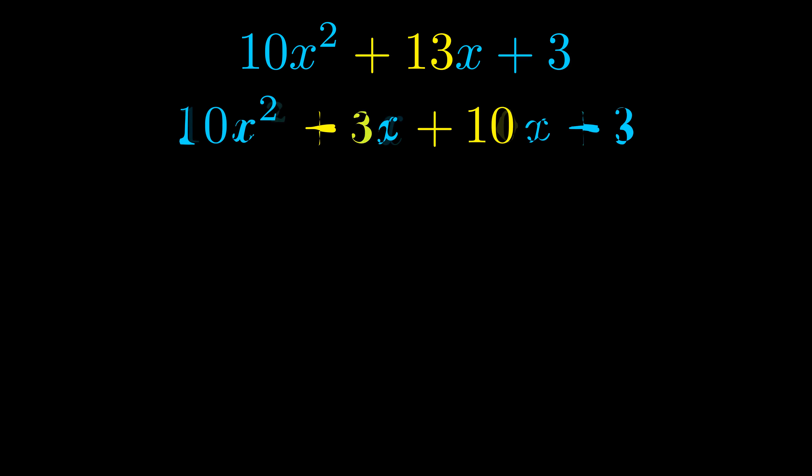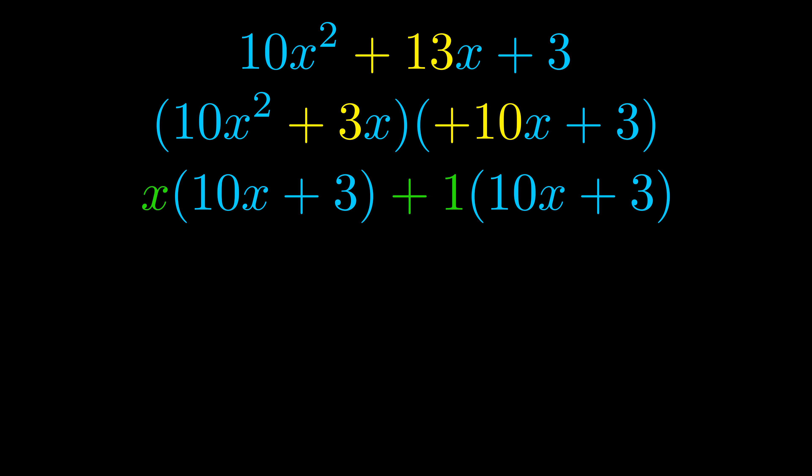Once we've done this we go ahead and we put parentheses around the first term and the last term and we do that so that we can take the greatest common factor out of both terms. We can see the greatest common factor is now outside in green. Notice also how what remains inside of the parentheses is the same in both cases. The blue values are the same.